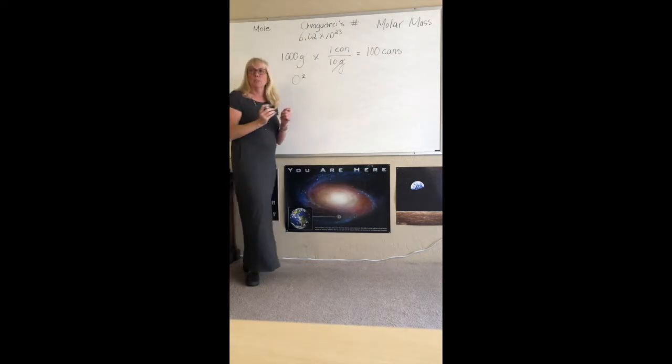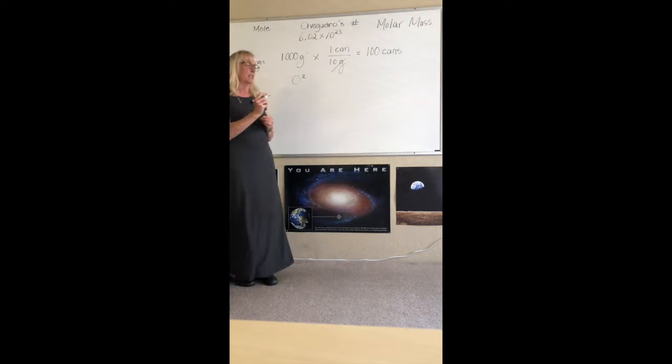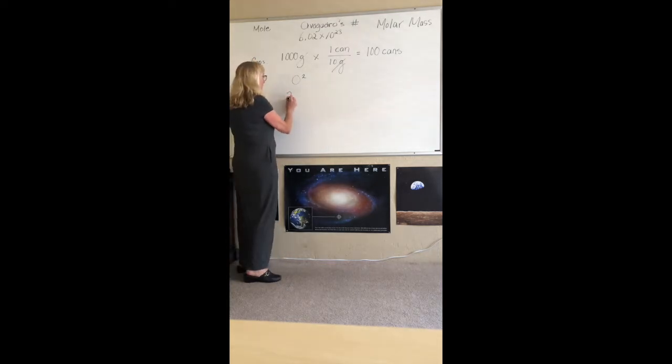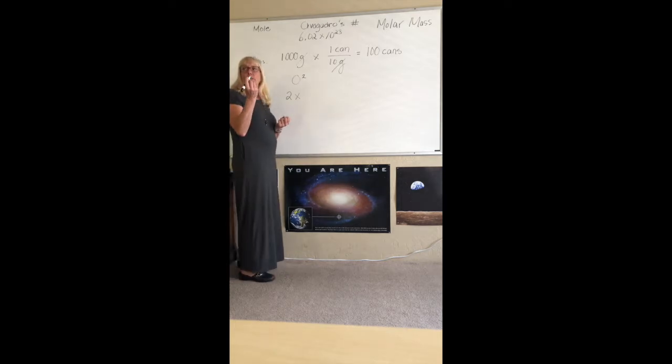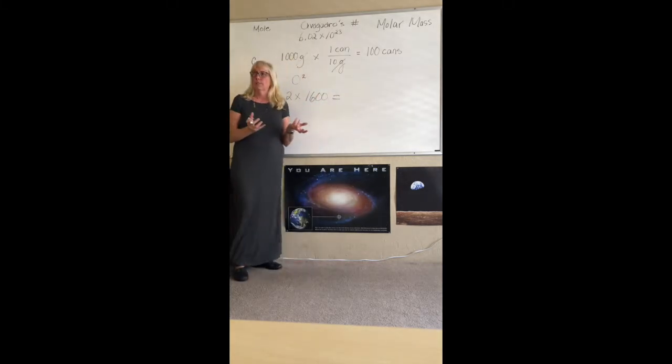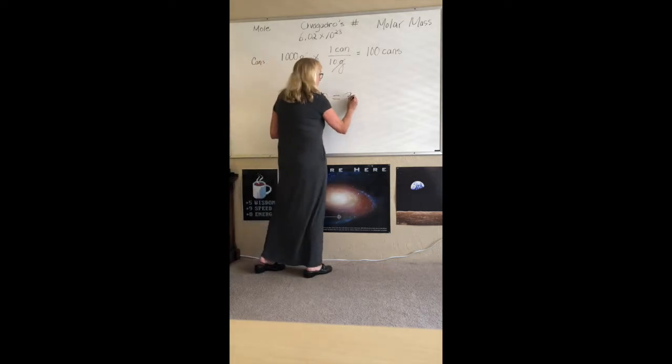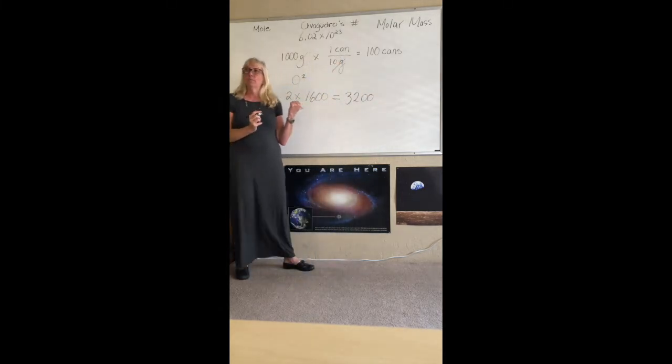So O2, we have the molar mass of O2, we're simply going to go two times because we take that two times whatever our weight is which is going to be 16. The molar mass is always the weight which is going to be 16 and it just is going to equal, this is a pretty simple equation, 32.